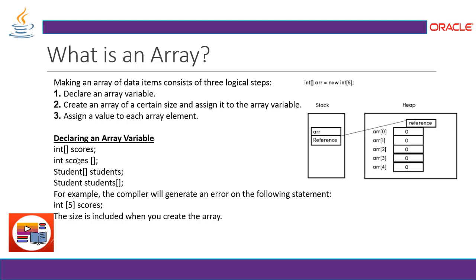There are a number of ways to declare an array. Number one, we can define the data type as integer according to the syntax we have seen, then mention the brackets and the array variable. Another way is: data type, then the array variable and the bracket. Now, suppose we need to make an array variable of an object of a class — that is also possible. For example, 'student' is your class, and 'students' is the array variable defined with brackets.